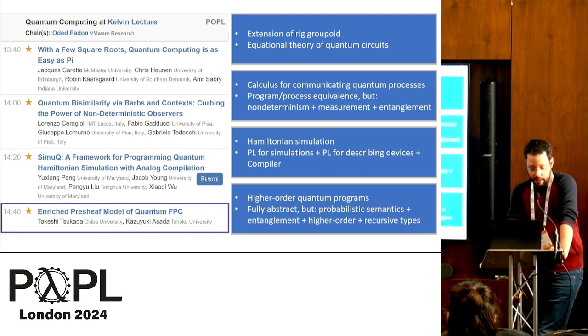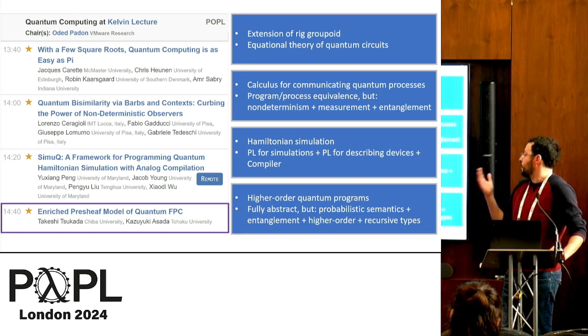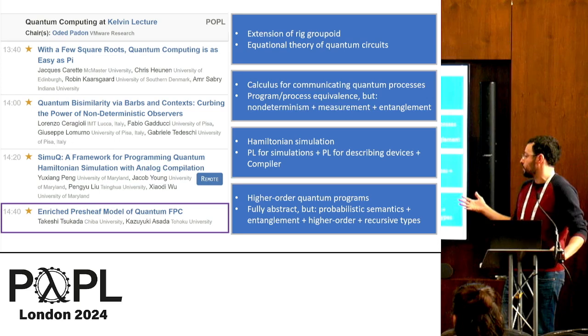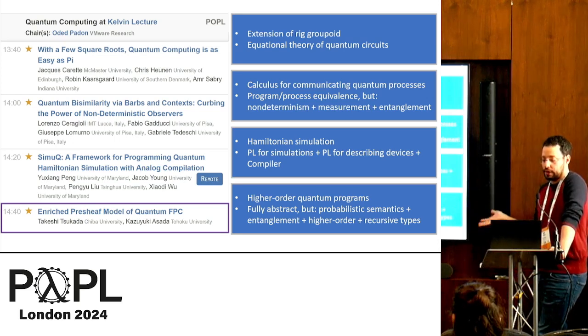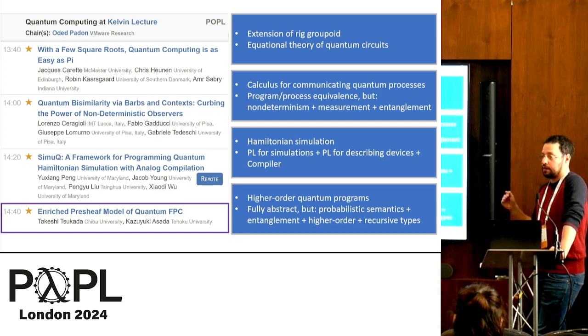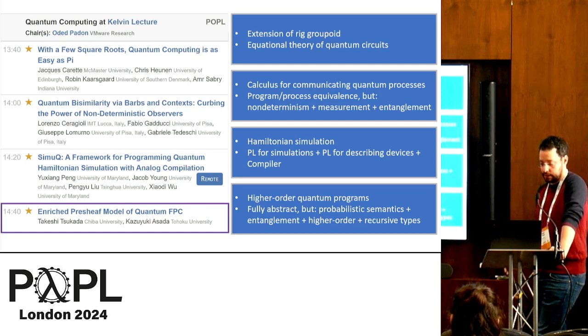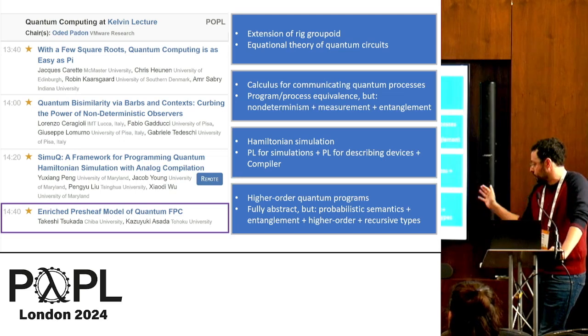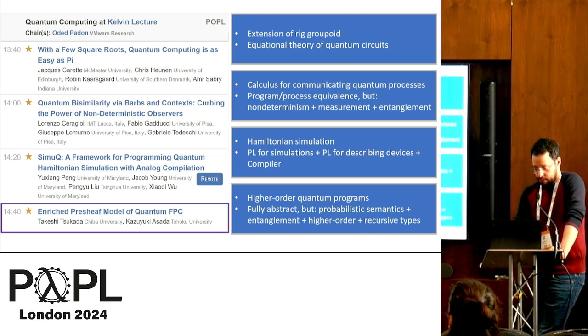And finally, the last paper considers higher-order programs and gives semantics of it which is fully abstract. And there are many intricacies that exactly arise because of the differences from classical probabilistic semantics because of entanglement and also because of higher-order and being recursive types.